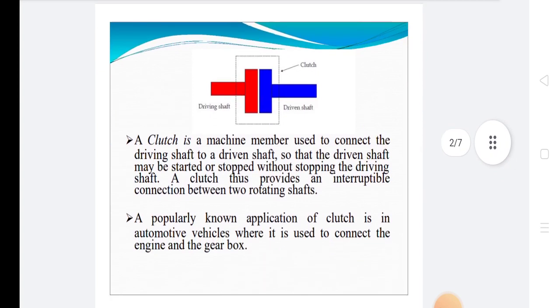A clutch is a machine member used to connect the driving shaft to the driven shaft so that the driven shaft may start or stop without stopping the driving shaft. A clutch thus provides an interruptible connection between two rotating shafts. A popularly known application of clutch is in automotive vehicles where it is used to connect the engine and the gearbox.